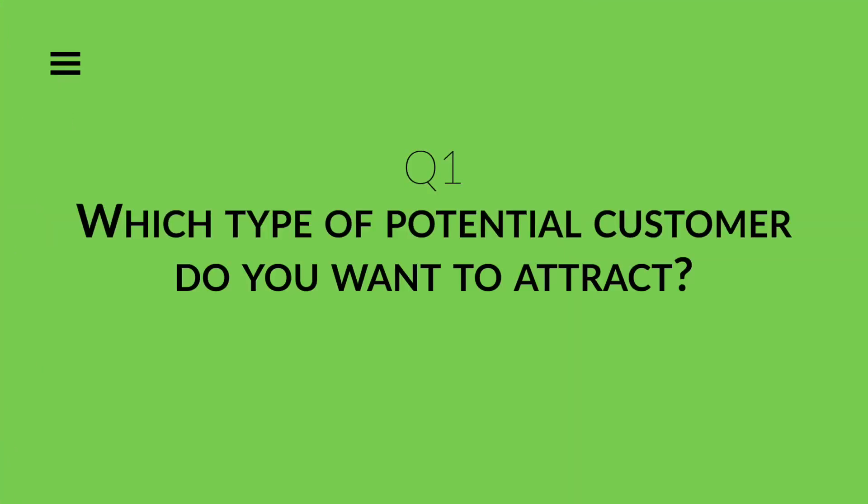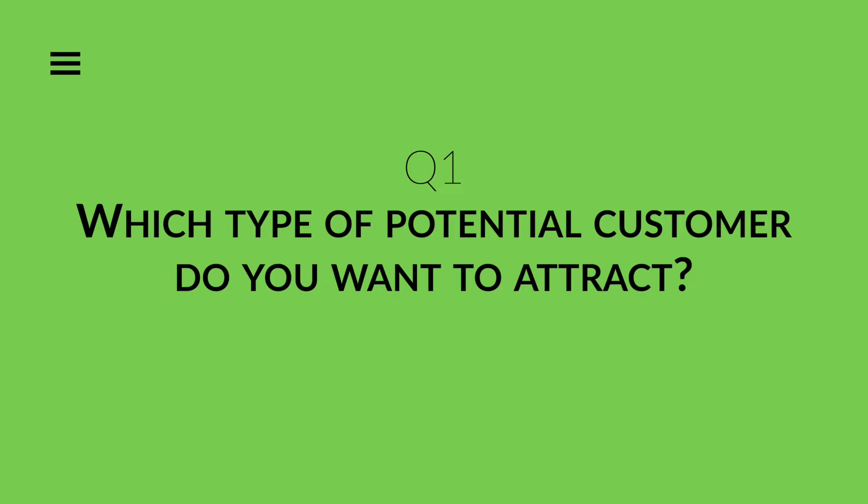I want to help you understand how this process works. Let's suppose we are selling an online course on how to create a website with WordPress. Question number one: which type of potential customer do you want to attract? Describe him or her in detail. My answer: my customer wants to understand how to create a website independently. He doesn't know where to start, he doesn't know any programming language, he doesn't want to spend tons of money, and on the flip side he wants to understand how to modify his website without asking anyone.